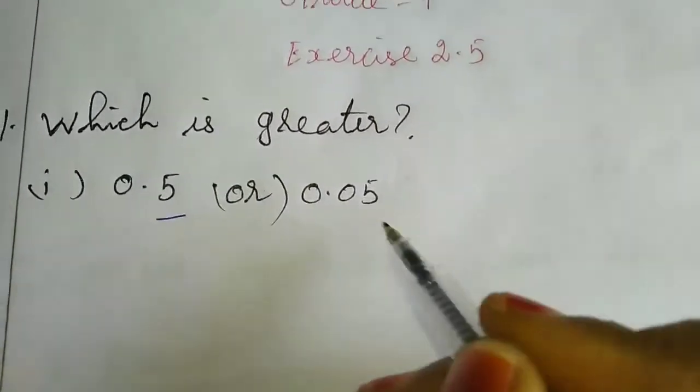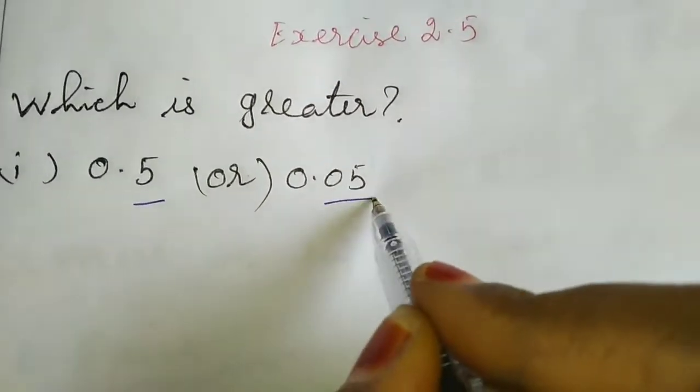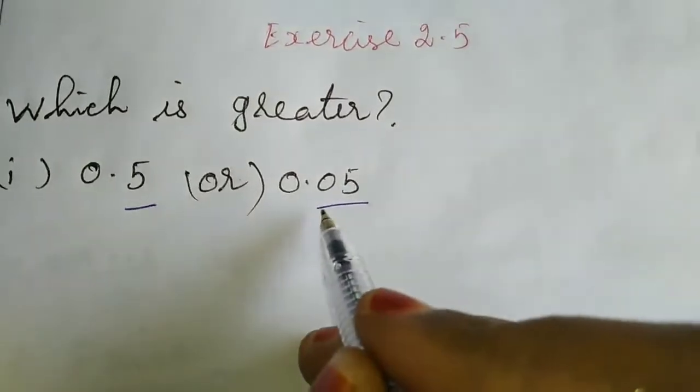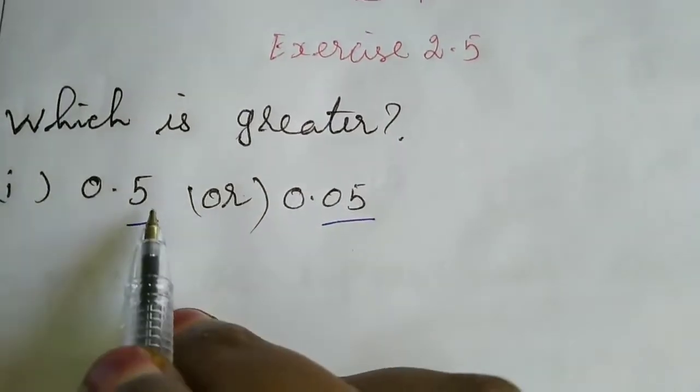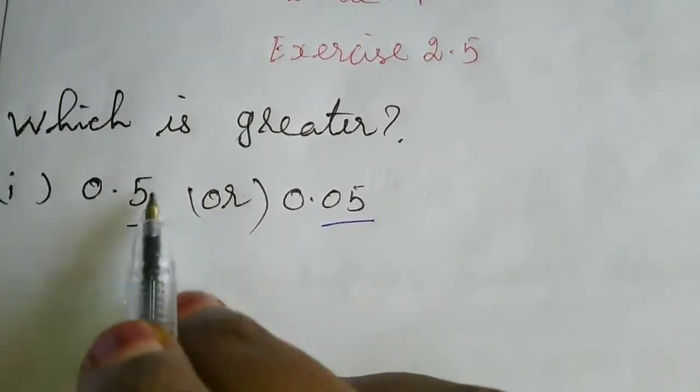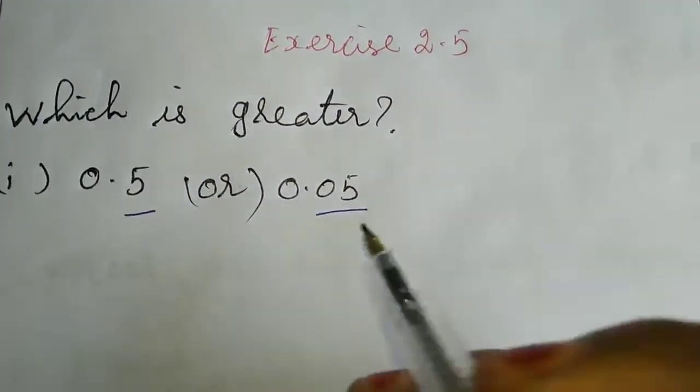Here we have only 1 digit after the decimal, and here we have 2 digits. For equalizing this, whichever one is lower, we want to add a zero to it.